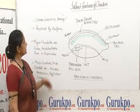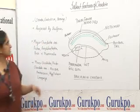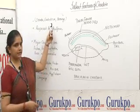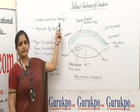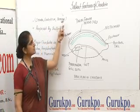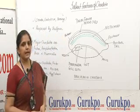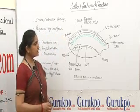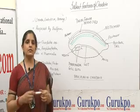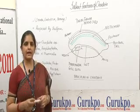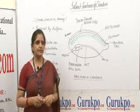The word Chordata is derived from two Greek words: Chorda and Ata. Chorda means cord and Ata means bearing. It means Chordata are cord-bearing animals.